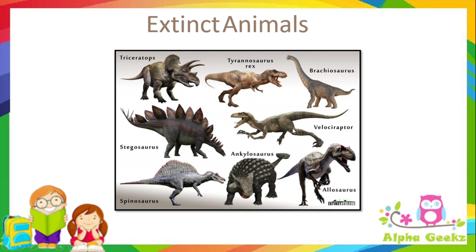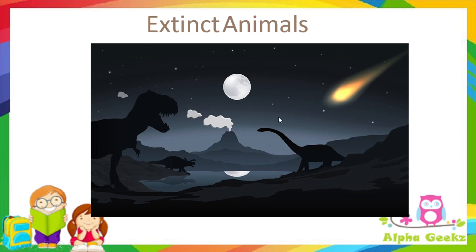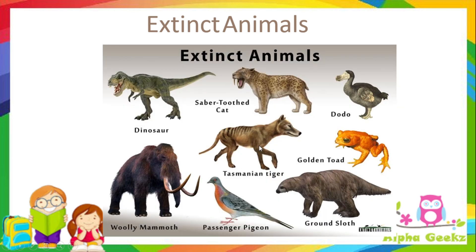Dinosaurs were huge animals that lived on Earth many millions of years ago — the largest animals on land at that time. They were completely wiped out because they could not adapt to changing surroundings. Animals which once existed but have now disappeared completely are called extinct animals. Examples include the dinosaur, saber-toothed cat, dodo, Tasmanian tiger, woolly mammoth, passenger pigeon, ground sloth, and golden toad.